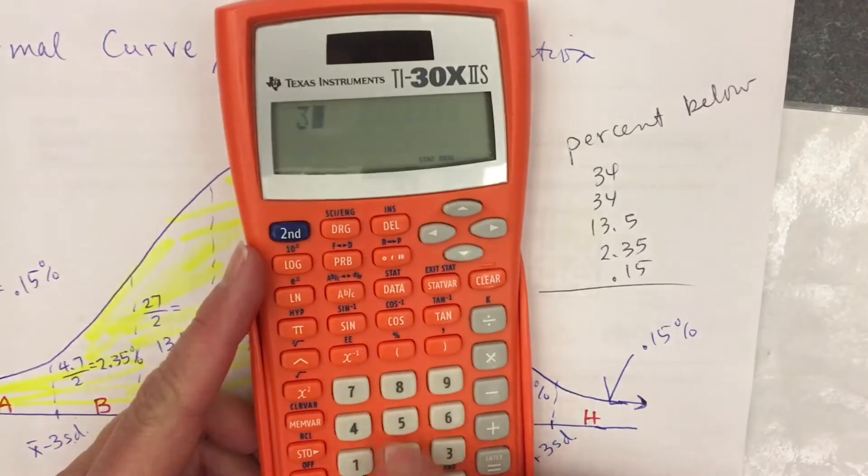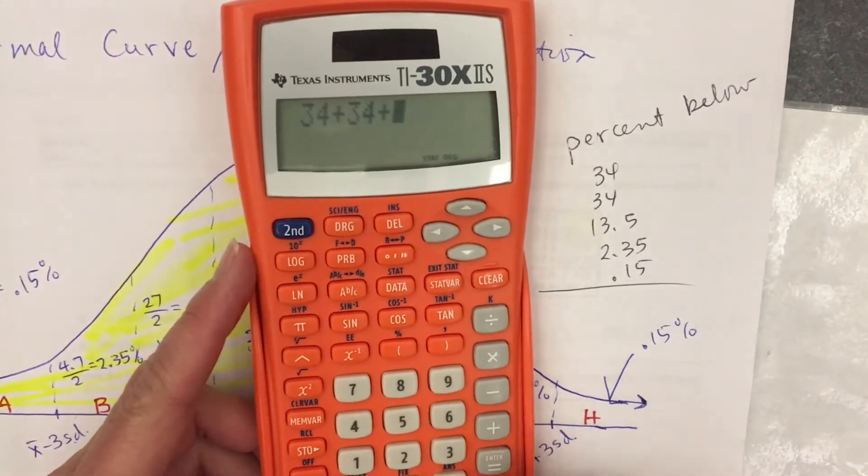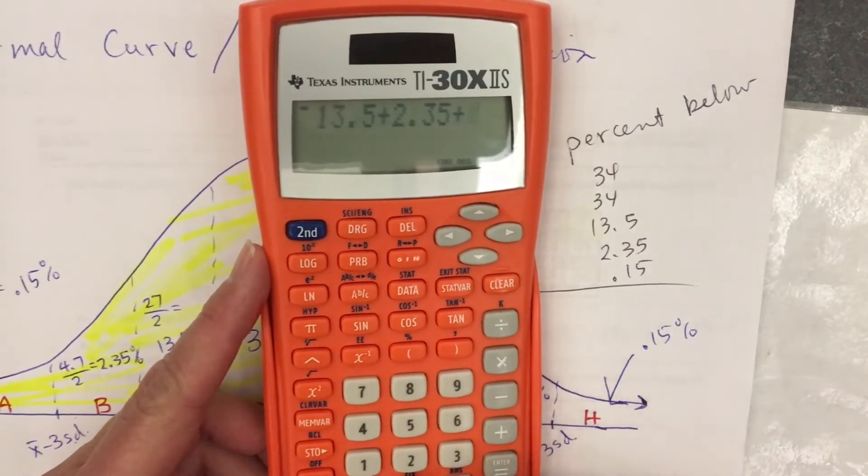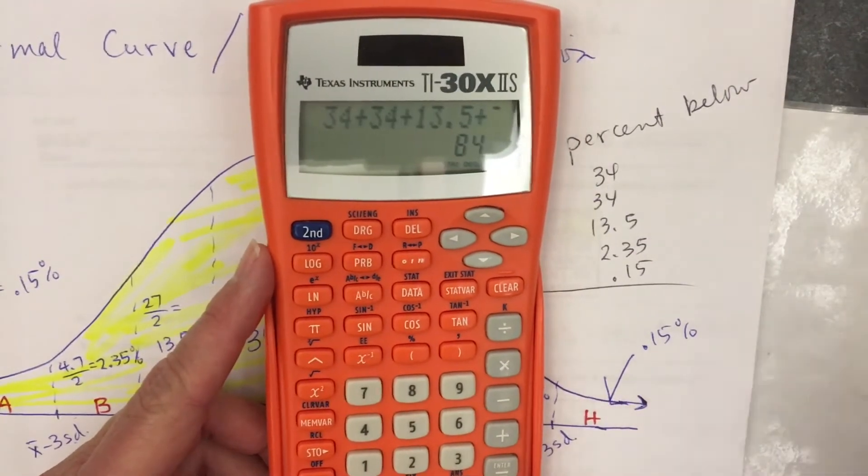Let's see what that will give us. 34, plus 34, plus 13.5, plus 2.35, plus 0.15, is 84.